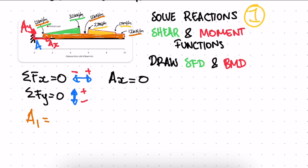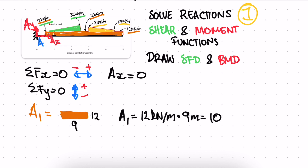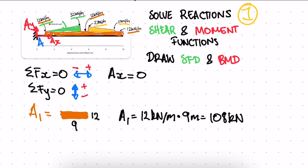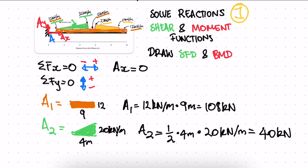We have one reaction Ay. Area A1 is the rectangle: 12 kN/m × 9 m = 108 kN. Area A2 is the triangle: the base is 4 m and the height is 20 kN/m, so A2 = ½ × 4 × 20 = 40 kN.